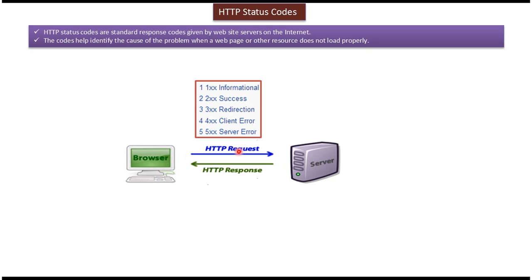Suppose a client sends an HTTP request to the server, and the server cannot process the request because the client sent a wrong request body or some wrong HTTP method. Because of that, the server cannot process the request, so the server will return an HTTP response to the client along with a 400 series client error status code. It can be 400 or 404, etc.